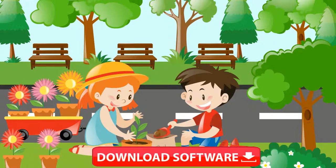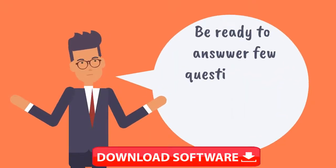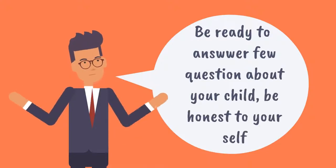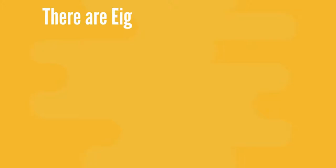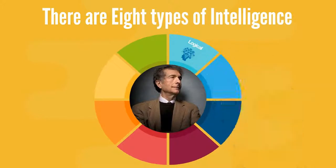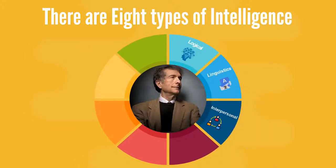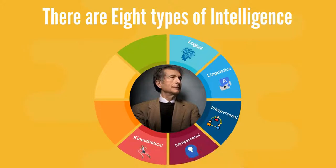As you care for your child, you want to understand their potential for effective guidance and support. Be ready to answer a few questions about your child honestly. There are eight types of intelligence: logical, linguistic, interpersonal, intrapersonal, kinesthetic, naturalistic, visual-spatial, and musical.